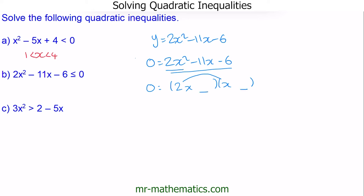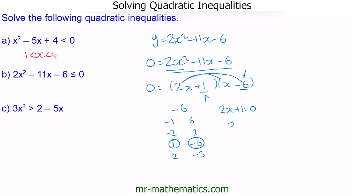To work out the numbers in the brackets, we consider the factors of negative 6: negative 1 and 6, negative 2 and 3, 1 and negative 6, and 2 and negative 3. One pair goes in each bracket position. When we multiply through, doubling negative 6 gives negative 12, and adding 1 gives negative 11. So negative 6 goes in one position and positive 1 in the other. Our roots are when 2x plus 1 equals 0, giving x equals negative one half, and when x minus 6 equals 0, giving x equals 6.